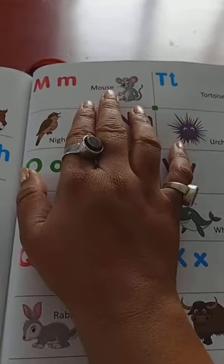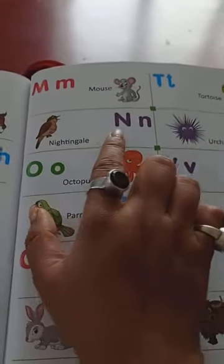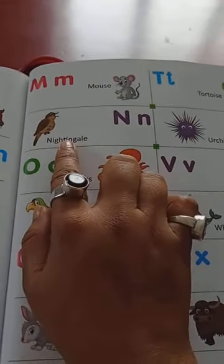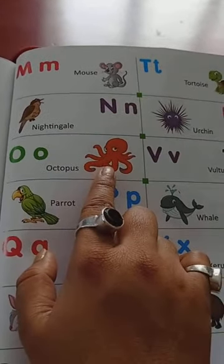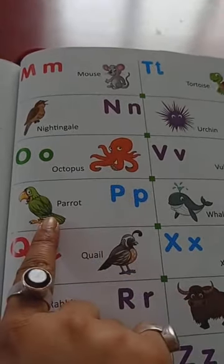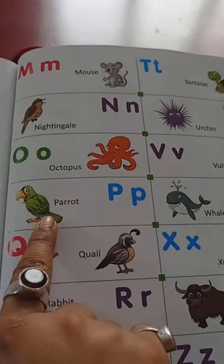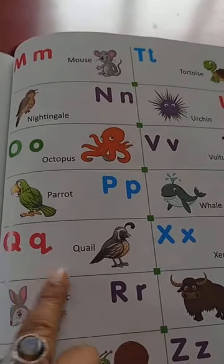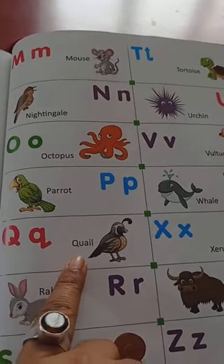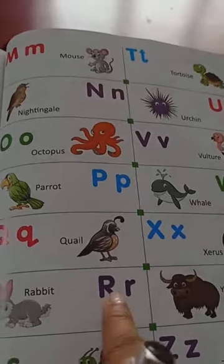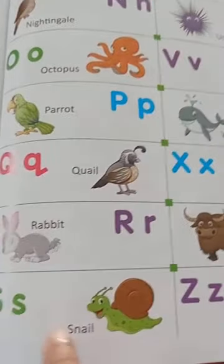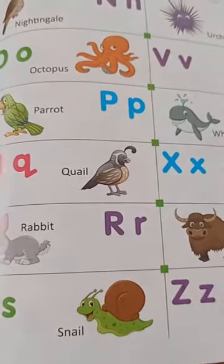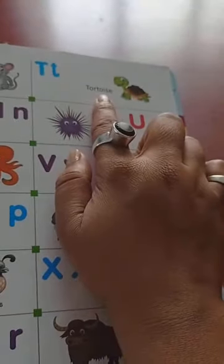M for mouse. N for nightingale. O for octopus. P for parrot. Q for quail. R for rabbit. S for snail. T for tortoise.